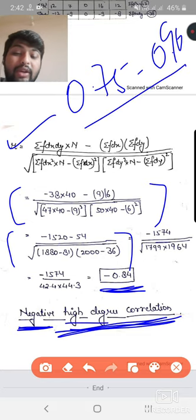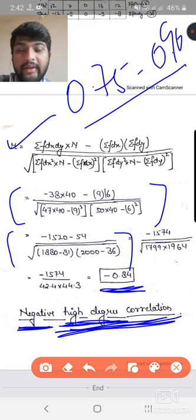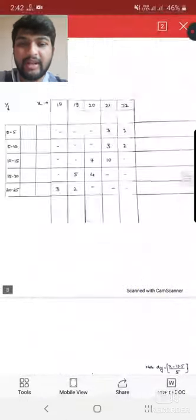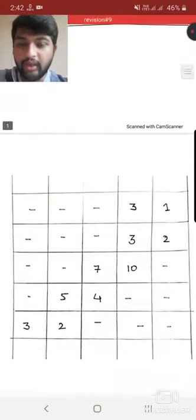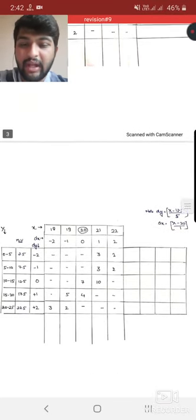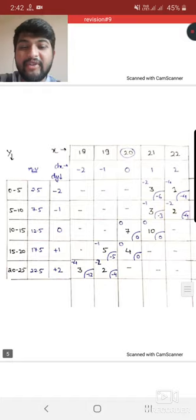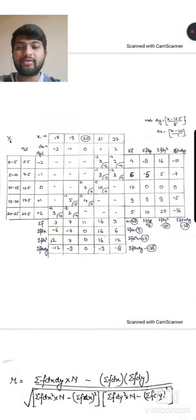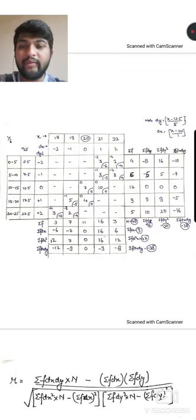You can see, write below. Since it's negative, we wrote negative high degree correlation. If your value is between 0.75 to 0.90, we call it high degree. Above 0.90 is very high degree correlation. Our value is between 0.75 to 0.90, so we call it high degree correlation. This is how you wind up the question. This is all you have to do. Remember, I told you at the beginning, note the question properly, make columns. I showed you how to do the question.